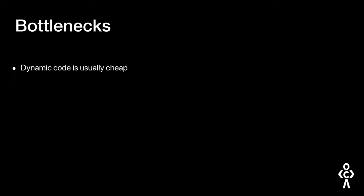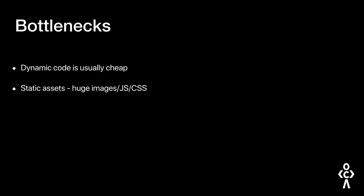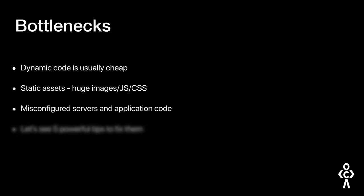First things first — the bottlenecks for websites. Dynamic code is usually cheap in terms of network size and can be transmitted almost every time. Dynamic code is the code which is actually changing — it might be your homepage or some code which cannot be cached on the client's end. The problem comes with static assets, which include images, video files, fonts, JavaScript files, and CSS files that are not really changing. For example, your node modules — you do not really modify those at all, so those files could be cached on the user's end. Misconfigured servers and application code are also responsible for slower websites. We're going to fix all of them in these next five powerful tips.